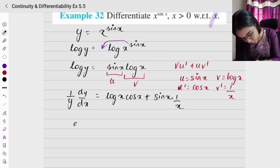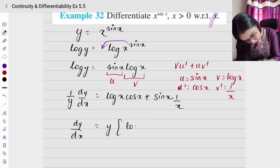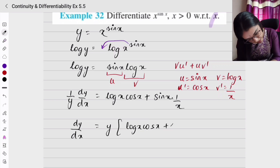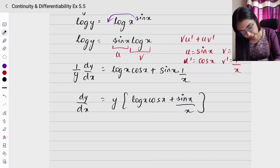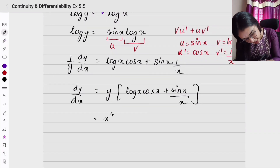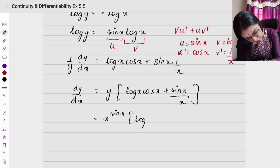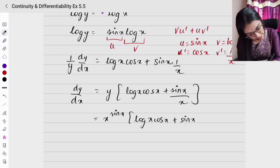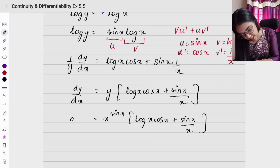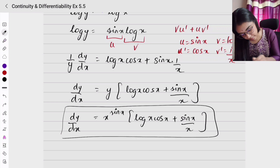Simplifying: dy/dx = y times (log x · cos x + sin x / x). Since y = x^(sin x), the final answer is dy/dx = x^(sin x) times (log x · cos x + sin x / x). Please copy.